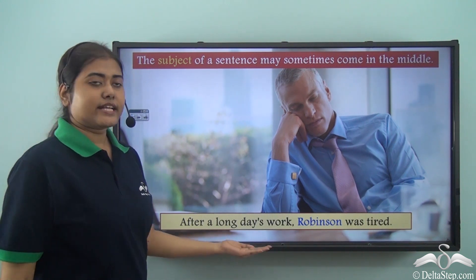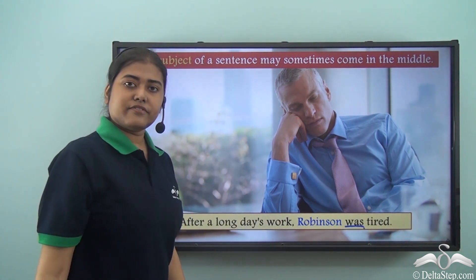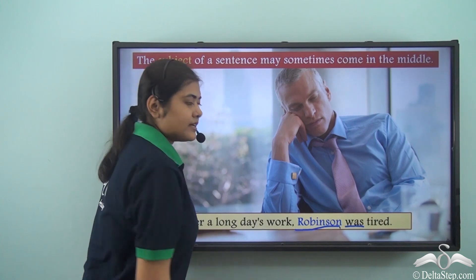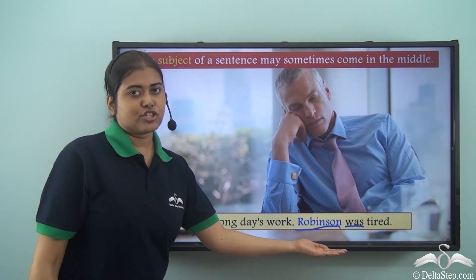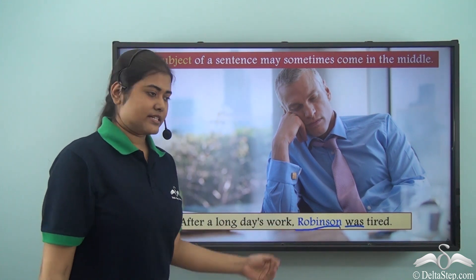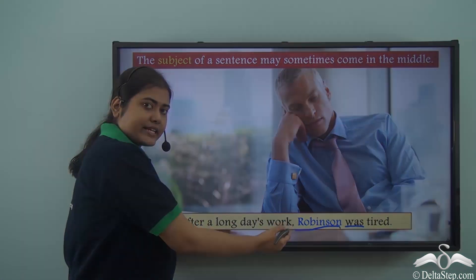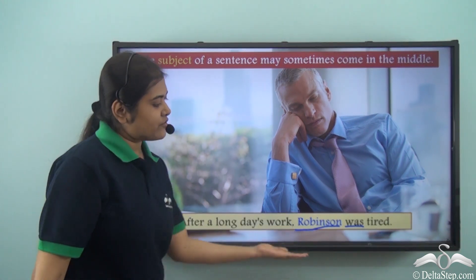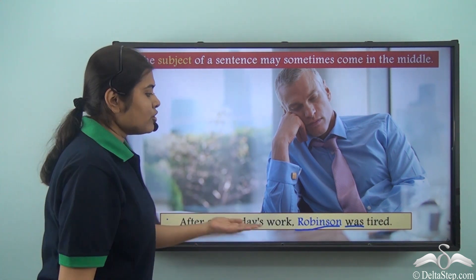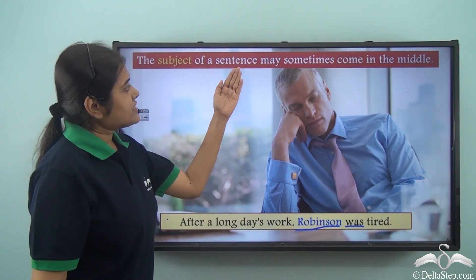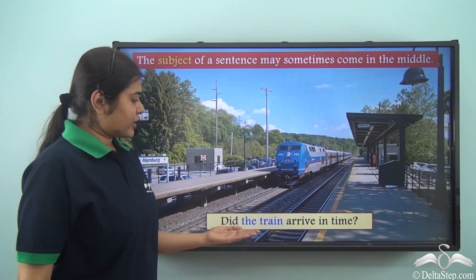'After a long day's work, Robinson was tired.' Here 'was' is the verb and 'Robinson' is the subject of the sentence. Once again the subject is positioned in the middle of the sentence. A part of the predicate — 'after a long day's work' — comes at the beginning, which is followed by the subject, and then comes the verb and the rest of the sentence.